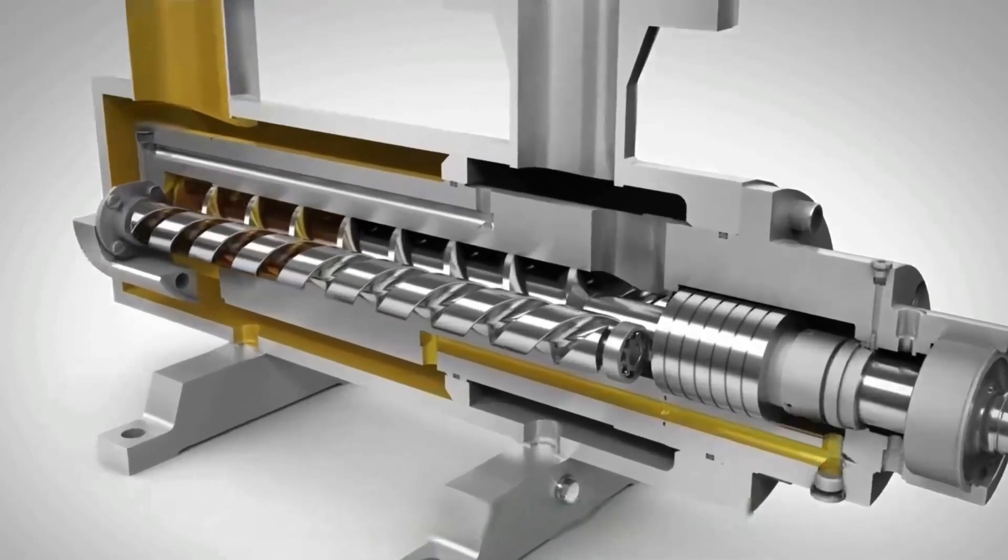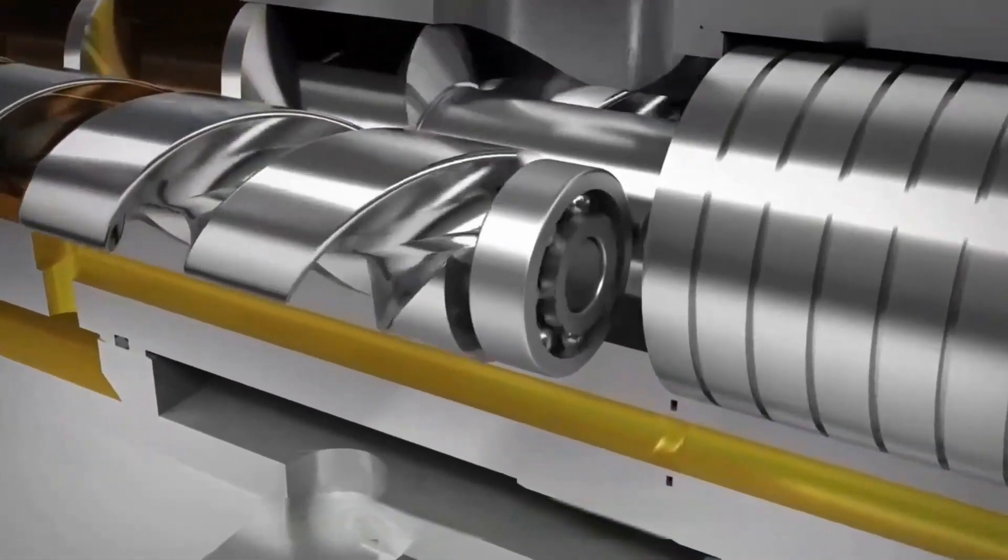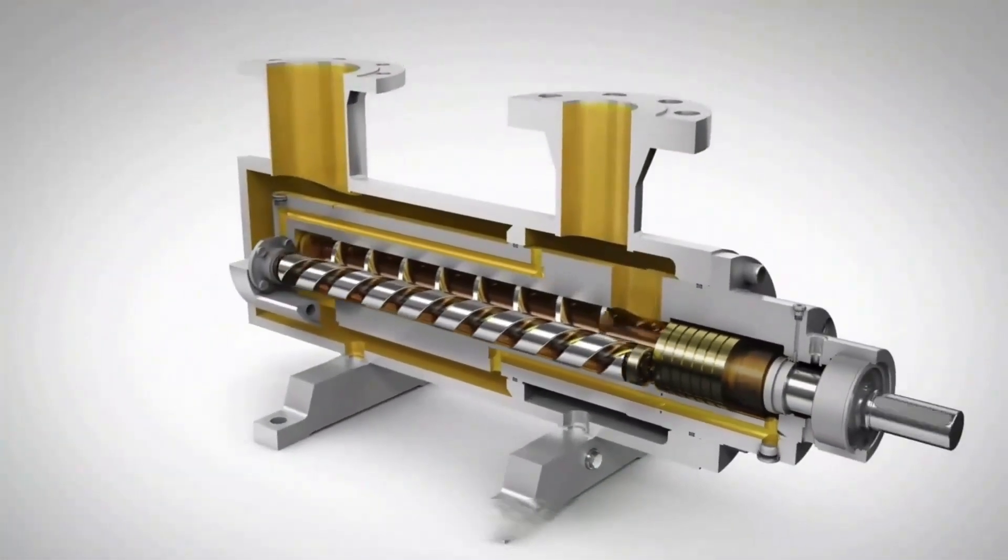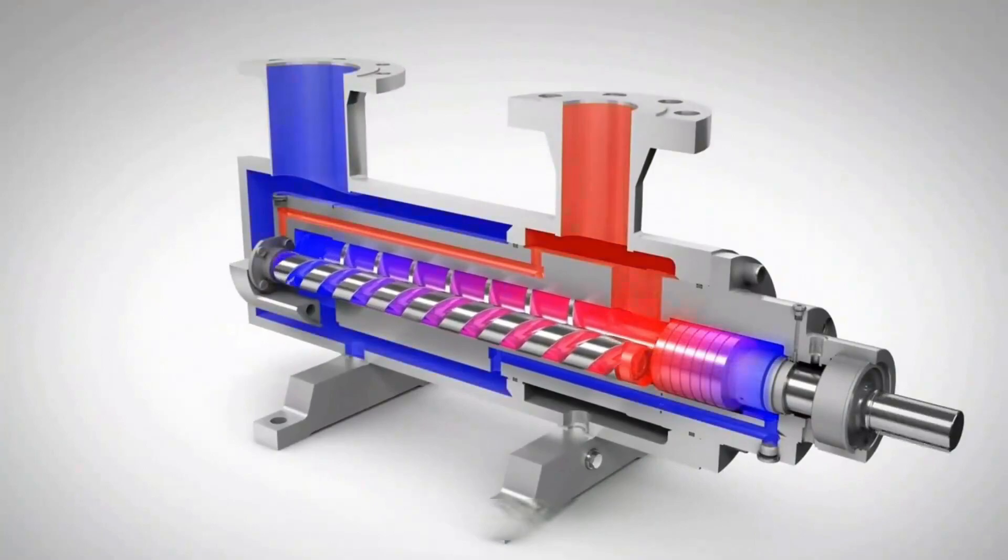The motor will drive the slave screws to rotate with it because these screws are meshed together. Due to the movement of the screws, the fluid is sucked into the pump from the inlet valve.